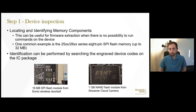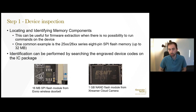The first step in the researchers' methodology was device inspection. They identify two major vectors to gain access: identifying memory components, or identifying communication ports that can be used to obtain a console on the device. Locating memory components is useful for firmware extraction when there is no possibility to obtain a console or run commands on the device. Many devices running Linux need sufficient memory to store the kernel and file system, and for cost savings, these are often located in a chip external to the main processor.